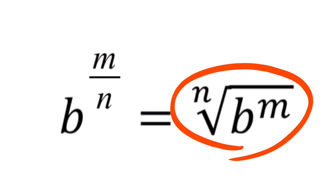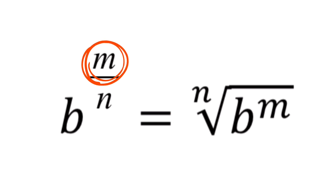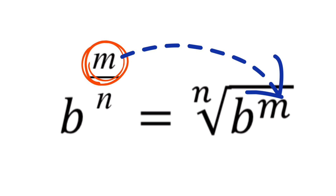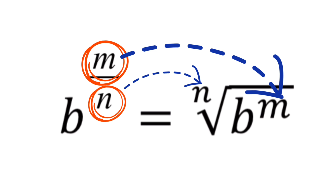The radical form is read as the nth root of b raised to the power m. Notice that m in the rational exponent form is the numerator of the exponent — this is the exponent of the radicand in the radical form. On the other hand, the denominator n is the index of the radical form. This is how we rewrite rational exponent form to its equivalent radical form. Now let's take some examples.